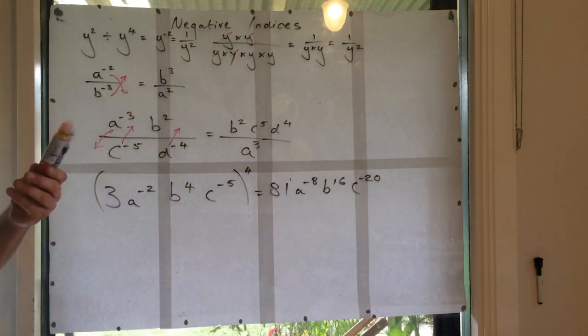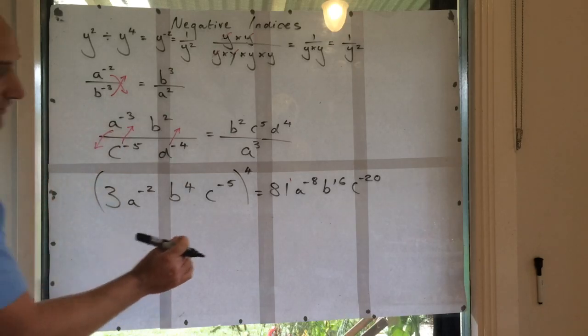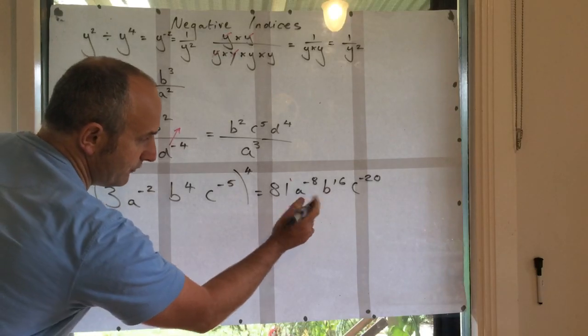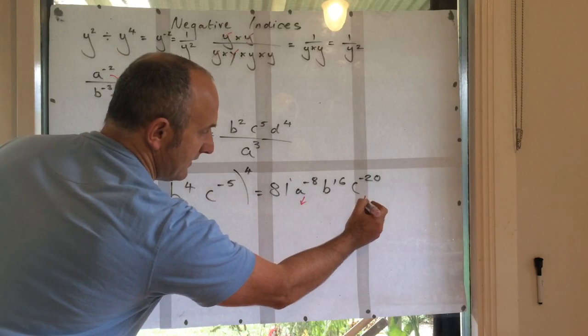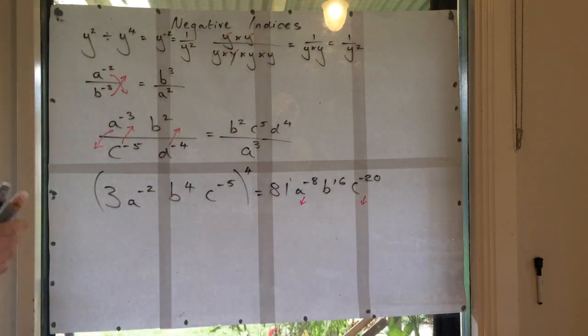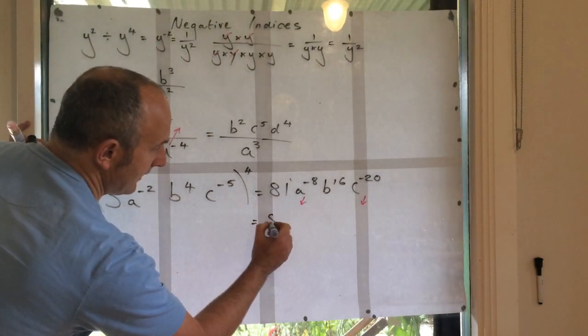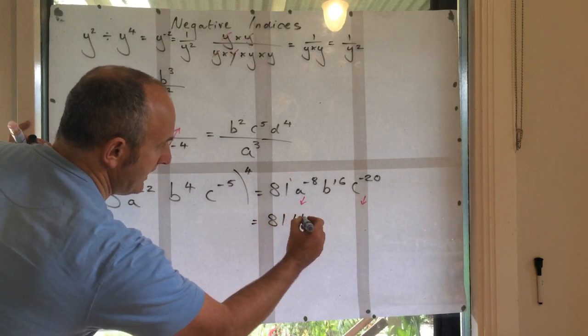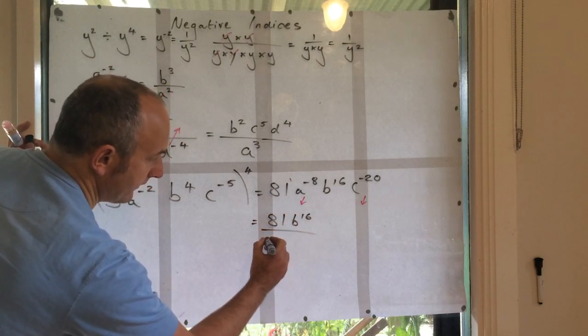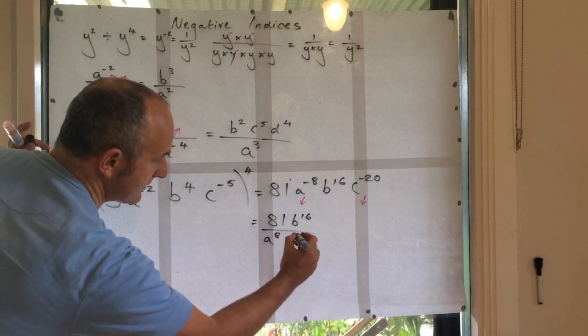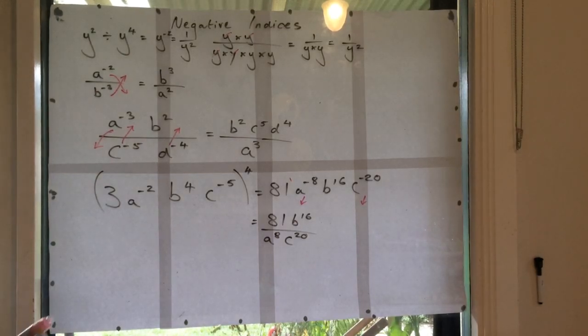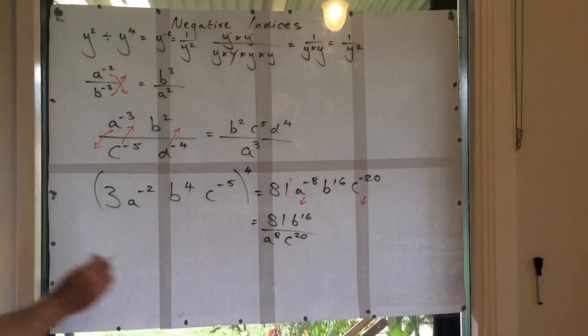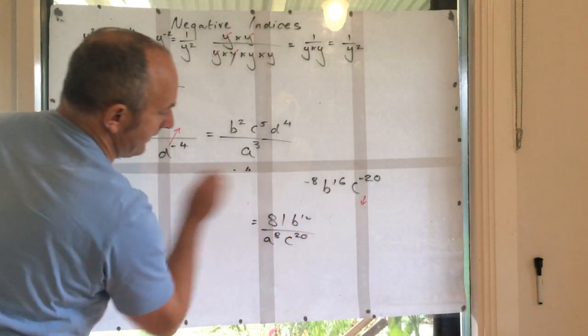So what I'm now going to do, I'm now going to create a denominator. So I'm now going to write, I'm going to move this down into the denominator, and this down into the denominator. So my final answer is going to be 81, b to the 16, over a to the 8, c to the 20. Good, all right, you might have to rewind that and do that question again. Okay, I'll just clean the board and we'll finish off.